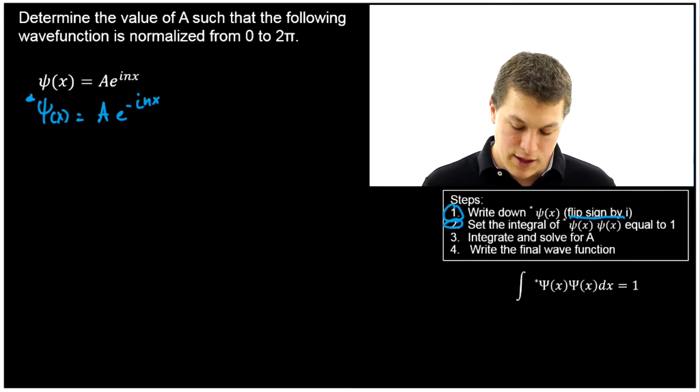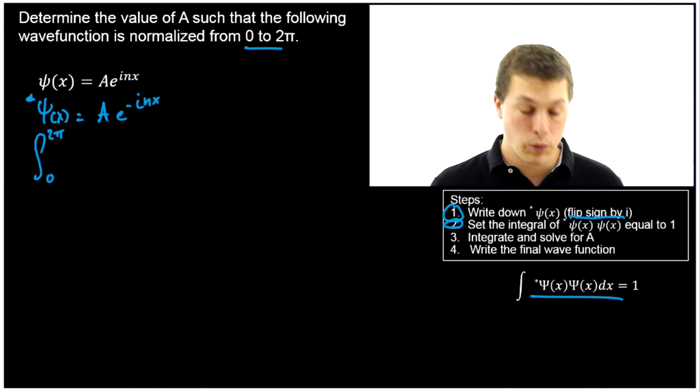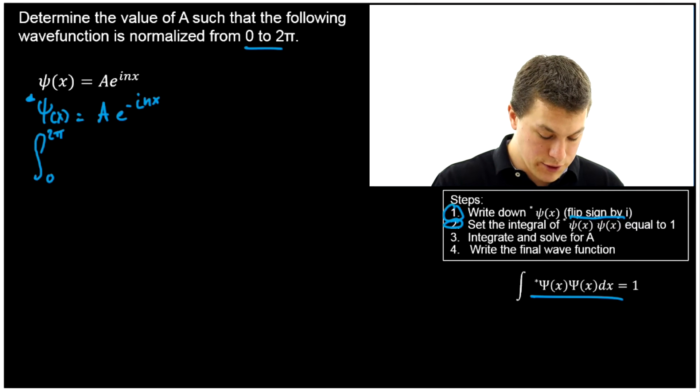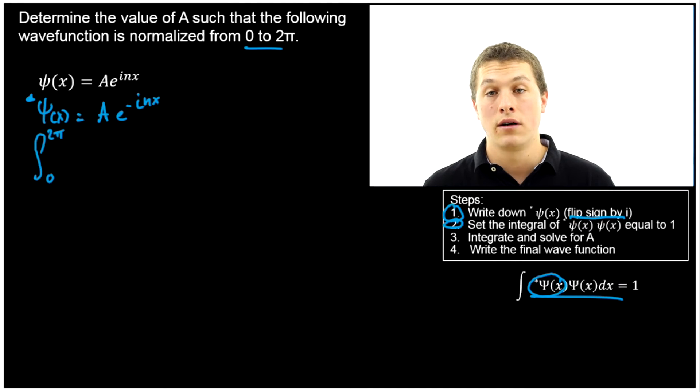Now step two says set the integral of the complex conjugate times the original wave function equal to one. We're just using this formula. So that means I'm going to do the integral from 0 to 2π. That's the bounds given in our problem. The bounds will be given somewhere in your problem when you normalize a wave function.